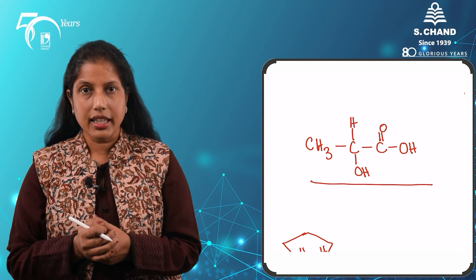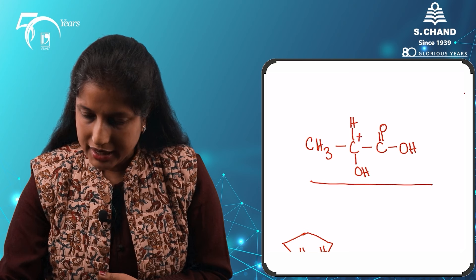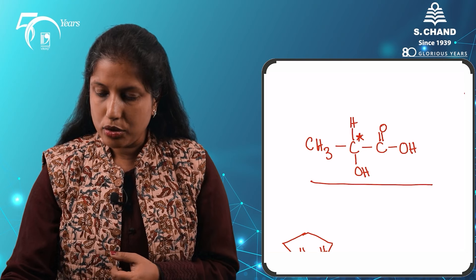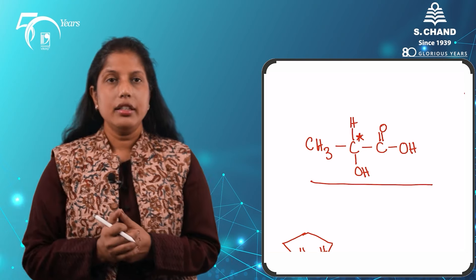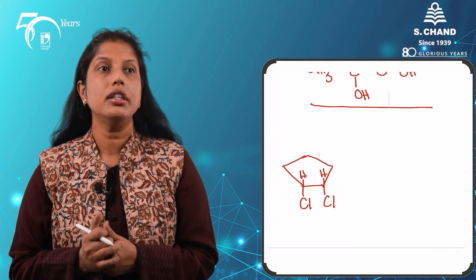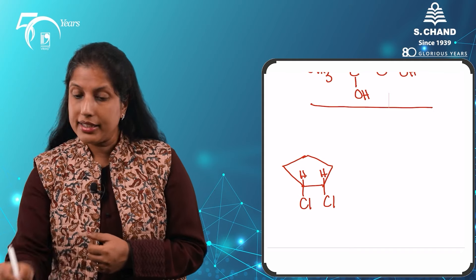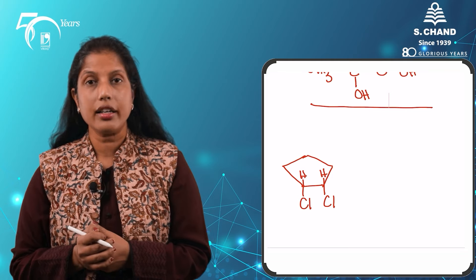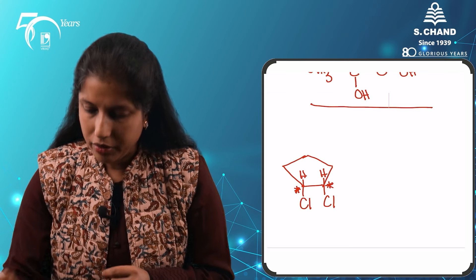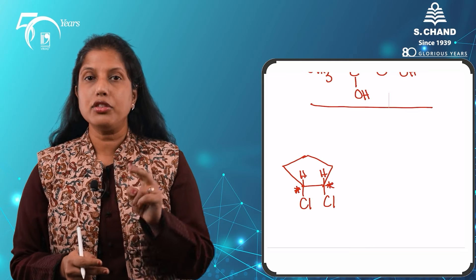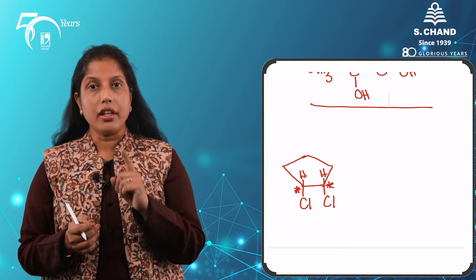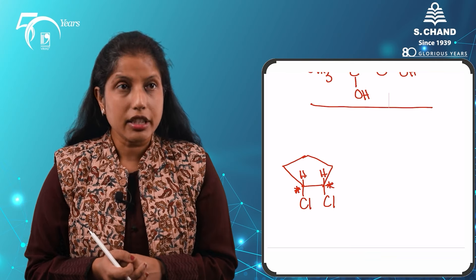Yes, it does. This carbon, which we designate by the asterisk symbol, is a chiral carbon atom — it is attached to four different groups. Now let's consider this molecule: cis-1,2-dichlorocyclopentane. Does this molecule have a chiral carbon? It does — there are two chiral carbons here, marked with the asterisk symbol. But even though it has two chiral carbon atoms, it is still going to be an achiral molecule.